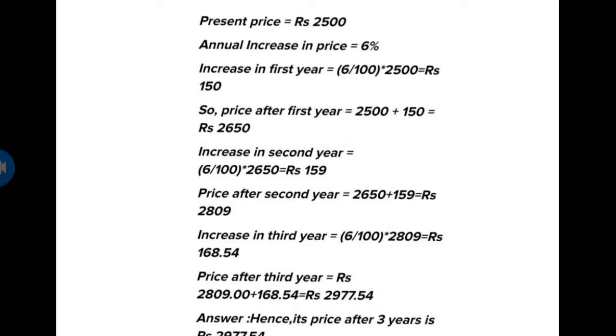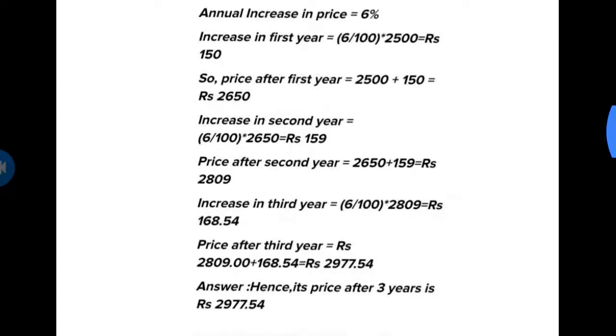Increase in second year: we will do the same as we did in first year. 6 upon 100 multiplied by 2650. This time we will get 159. The price after second year: we will add this number, 2650 plus 159, so it becomes 2809.